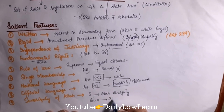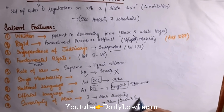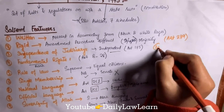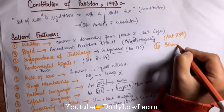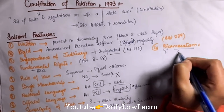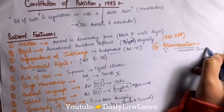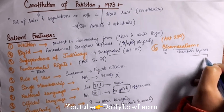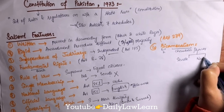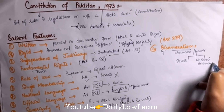Next is sovereignty of Allah. The Constitution of Pakistan says that sovereignty belongs to Allah Almighty and laws should be made according to Islam — that means according to the injunctions of the Quran and Sunnah.